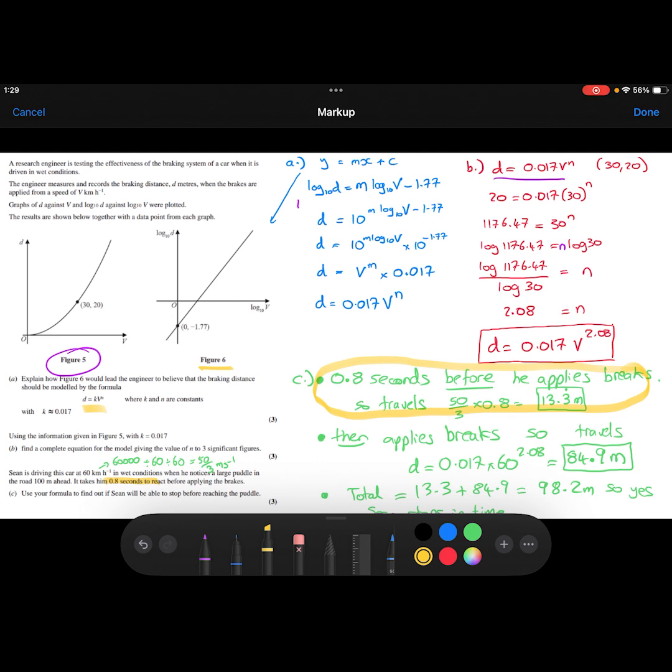In those 0.8 seconds, he's traveling at 60 km per hour, which I have turned into metres per second here. I've taken the 60 kilometres and turned it into 60,000 metres. So he travels 60,000 metres in one hour. If I divide it by 60, that tells me how many metres he will travel in one minute.